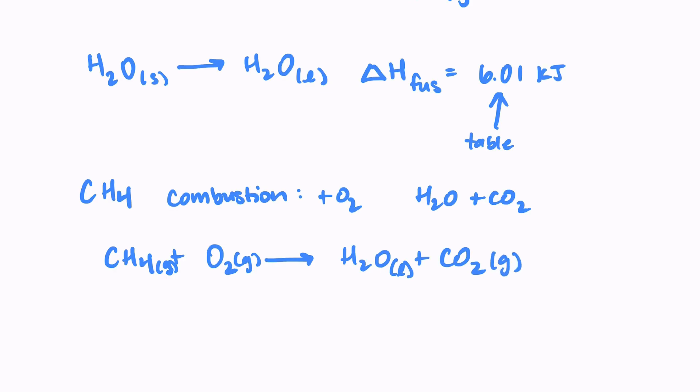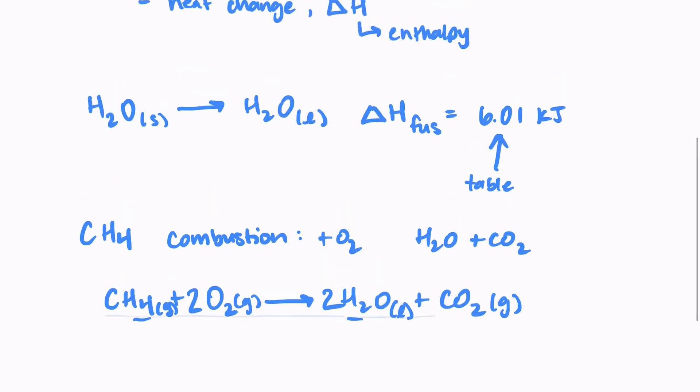And then we need to make sure that this is balanced. We have four hydrogens here and only two here. So we need to put a two. And then we have four oxygens on the right hand side. So we need to put a two here. So now it is balanced.